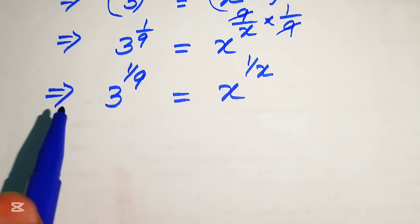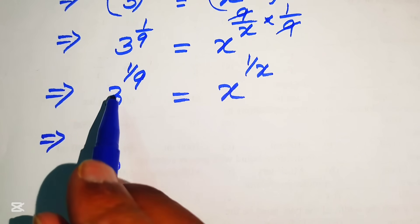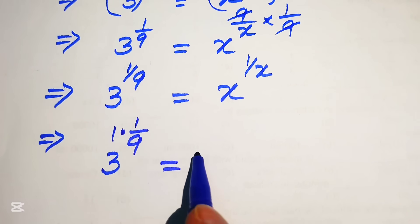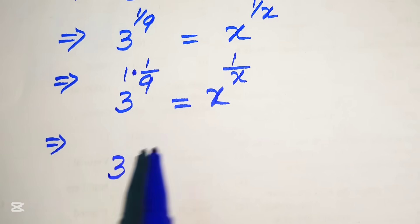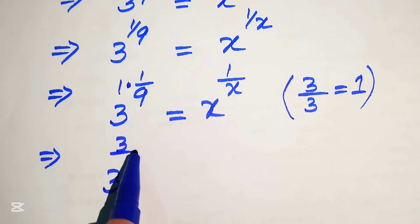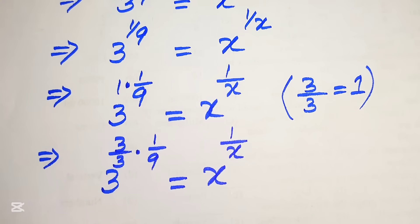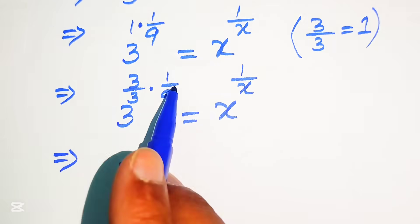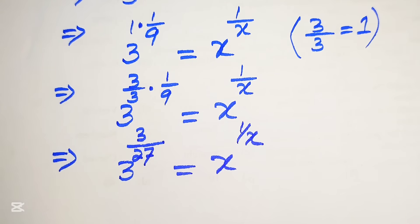We need to create the same condition on the left hand side, where the base and the exponent are reciprocals of each other. Currently the base is 3 but the exponent is 1 over 9, not 1 over 3. So we multiply and divide the exponent by 3, replacing 1 with 3 over 3 — since 3 divided by 3 equals 1 — giving us 3 to the power of 3 over 3 times 1 over 9 equals x to the power of 1 over x.